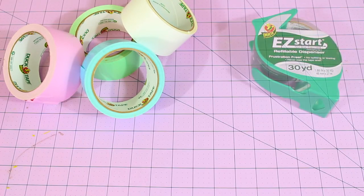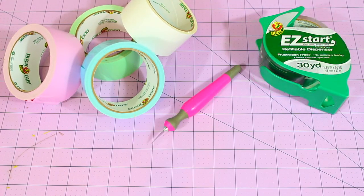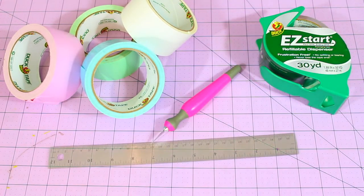So now let's just start off with the supplies. For the supplies you will need a cutting mat, duct tape, clear tape, an exacto knife, a ruler, and optional is a pair of non-stick scissors.